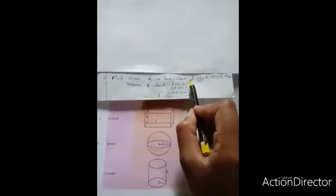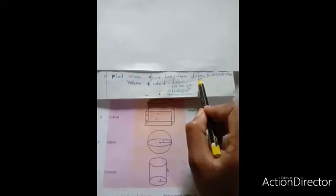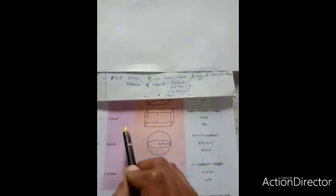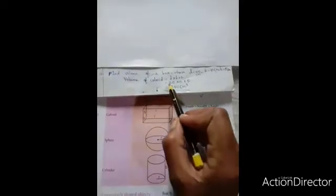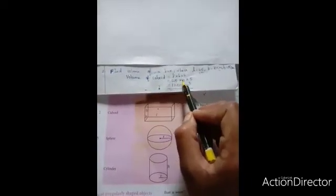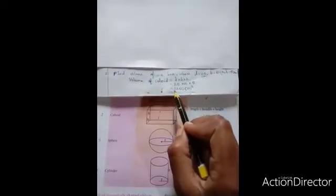Students, now give an example for cuboid. Yes, your pencil box is a cuboid. Here, I am giving you a sum. Find volume of a box whose sides are length 25 cm, breadth 10 cm and height 5 cm. To find volume of this box, we have the formula for cuboid. That is length into breadth into height. So, we are multiplying the sides. 25 into 10 into 5. So, we get the final answer 1250.